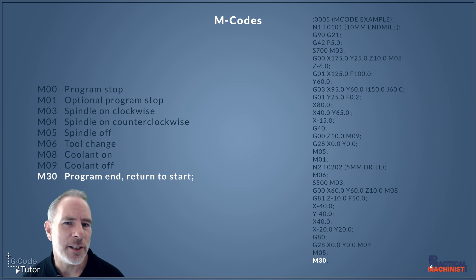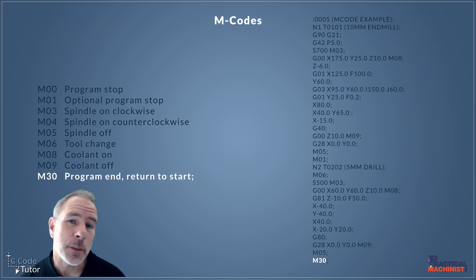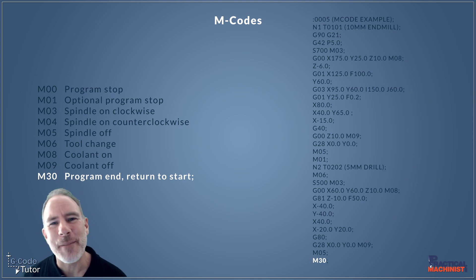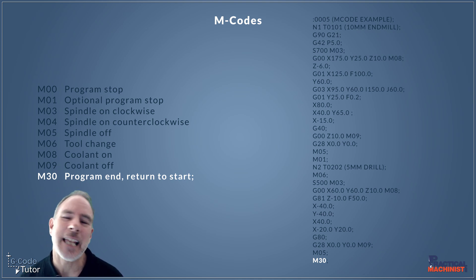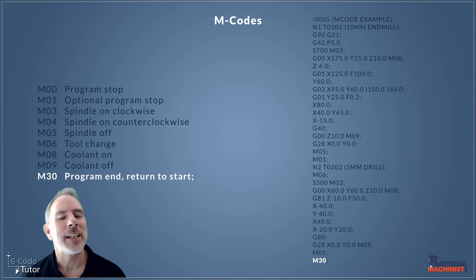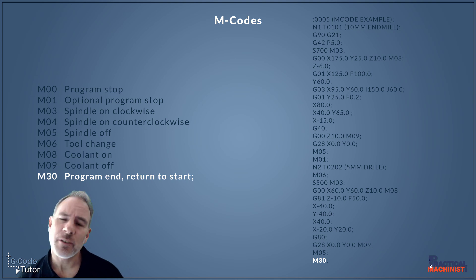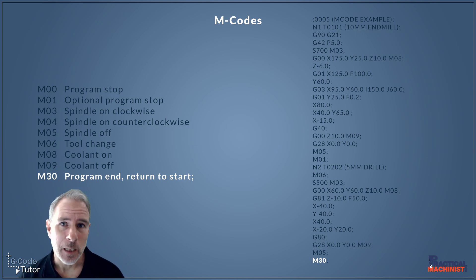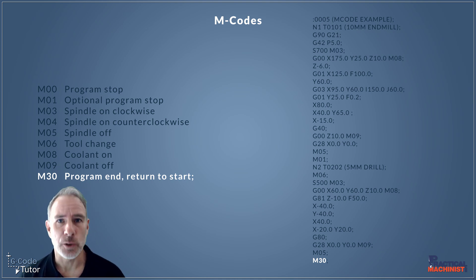The final M-Code, used at the end of the program, is M30. M30 stops the program and rewinds it back to the start — it doesn't literally rewind tape anymore, but it does take us back to the start of the program. It will continue running from there if we have continuous cycle on. Continuous cycle is a feature found on CNC lathes: as it reaches the end of the program it rewinds back to the start, and if continuous cycle is selected it will start reading the program again. On a milling machine, we would need to load a new billet at this point, so the cycle does not continue.